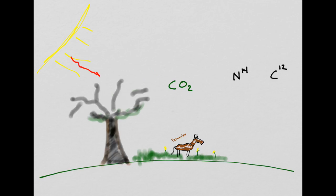So as long as a creature is alive, it will continue to take in new carbon-14, keeping its body in equilibrium. But if one of these creatures should stop taking in new carbon — that is, it dies — the clock is set. Over the next five to six thousand years, the radioactive carbon in, say, this tree is going to decay, converting back into nitrogen-14 and dissipating as a gas.